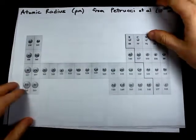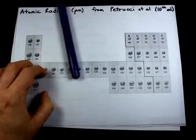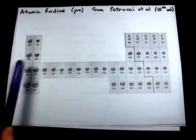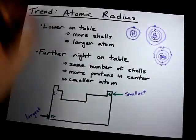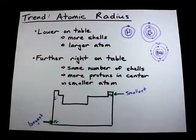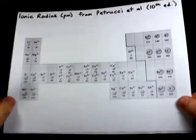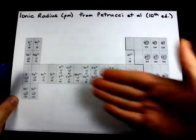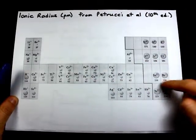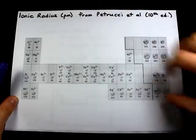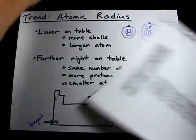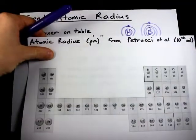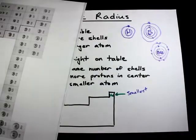Now, that is not true for ions, because ions involve adding and subtracting electrons, so you change the number of shells that each atom has. I'm going to do a separate video about ionic radius, but long story short, non-metals which gain electrons get bigger, and metals which lose electrons get smaller than their corresponding neutral atoms. Cool? Alright, best of luck!